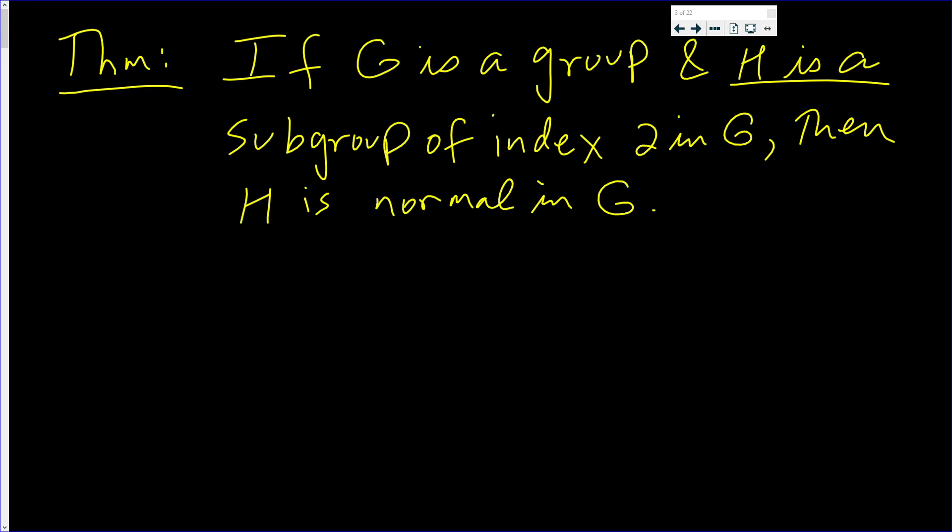In this video, we're going to prove the following theorem: If G is a group and H is a subgroup of index 2 in G, then H is normal in G.